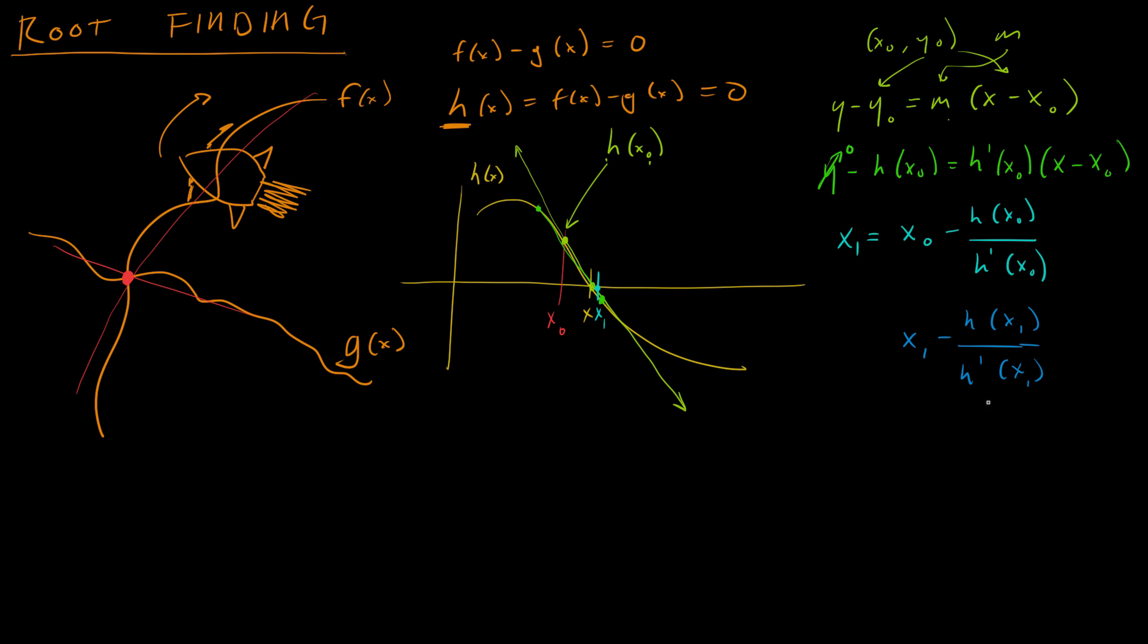And I can keep doing this forever or until I get an acceptable estimate, an estimate that's within, you know, I can use the same error calculation that I used, for example, in the bisection video to determine whether I'm now accurate enough. So this is Newton's method.